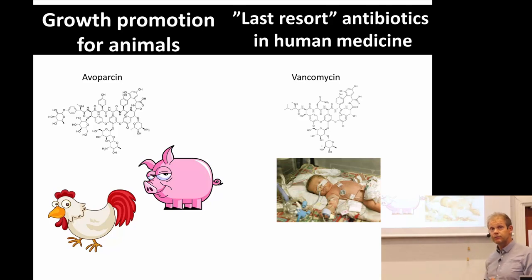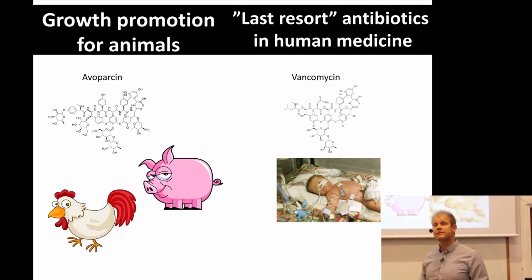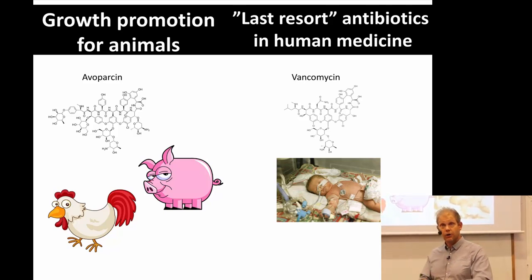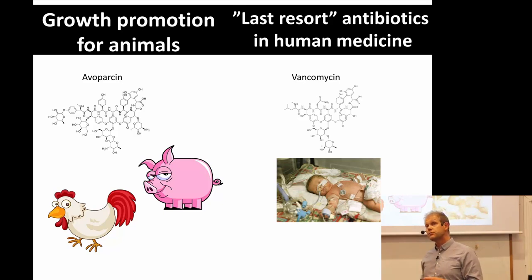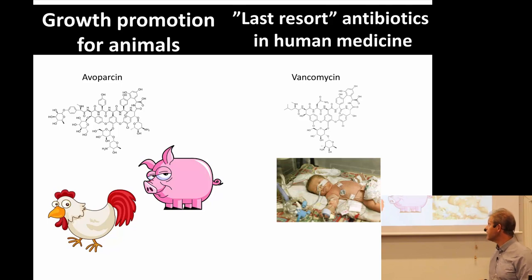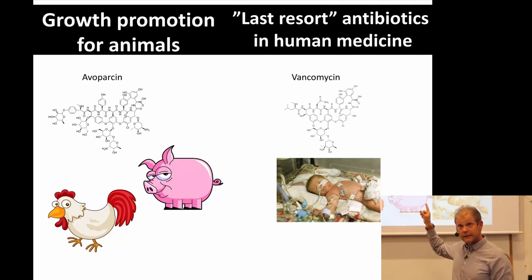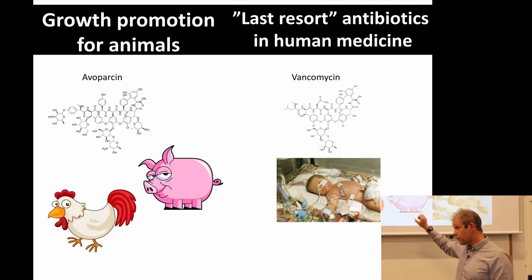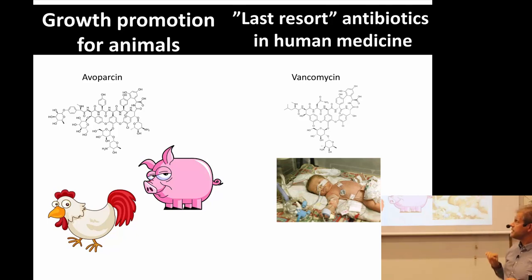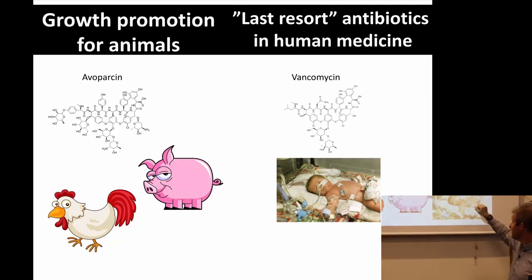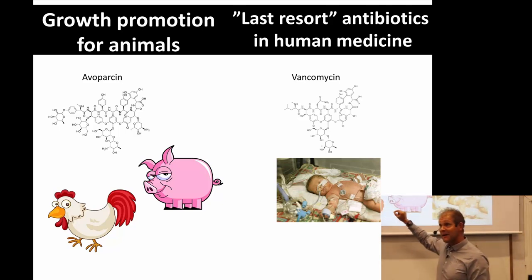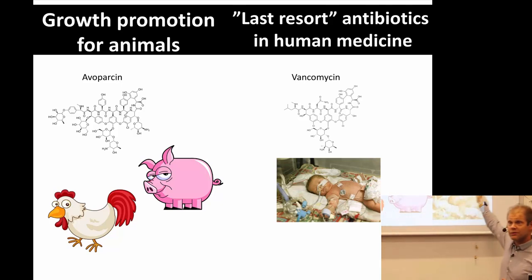Growth promotion can also involve the same types of antibiotics as we use for humans or for treating sick animals, and that can drive resistance. Sometimes even other compounds can drive resistance to antibiotics that are critical for human health. For example, Avoparsin is a complex molecule not used as a human antibiotic — it was given to farm animals for many years as a growth-promoting agent. But it's very similar to the important antibiotic vancomycin, used a lot in intensive care. It turned out that the same resistance mechanisms bacteria developed against Avoparsin also give resistance to vancomycin.